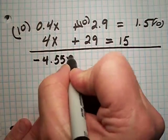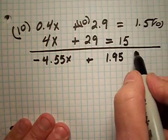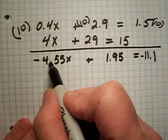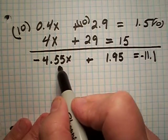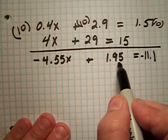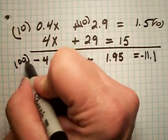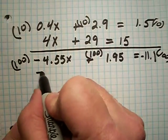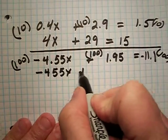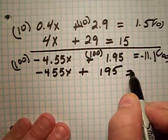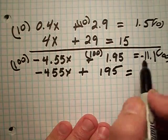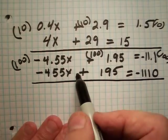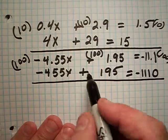Let's look at another one: -4.55x + 1.95 = -11.1. We look at each term, and the highest number of digits away from our decimal is two. So we need to multiply each term by one hundred. That would give us -455x + 195 = -1110. And again, we can solve our equation — it's going to be a little bit easier, and in the end it's not going to affect our solution.